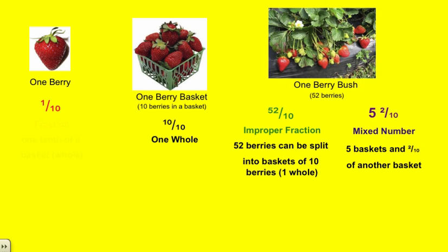So I thought we would go back to our example of the berries and the hockey players. We learned that the whole was when we had a berry basket with 10 out of 10 strawberries in that basket. And then we talked about how if you had one berry, that would be one tenth of the whole. Then we started talking about improper fractions and mixed numbers. So our improper fraction was when we went to the bigger amount of berries — when we thought about how many berries were in a big berry bush. We said there were 52 berries. So to write our improper fraction, we said there are 52 berries total, but to make a group or to make a whole, we would have to have 10.